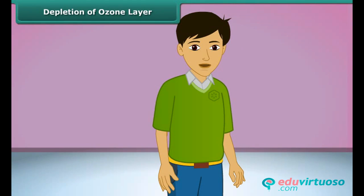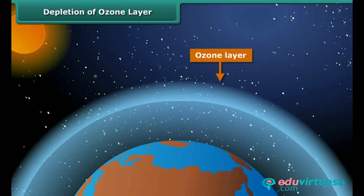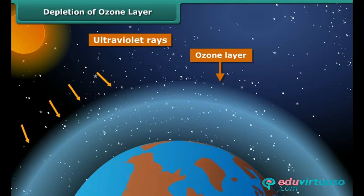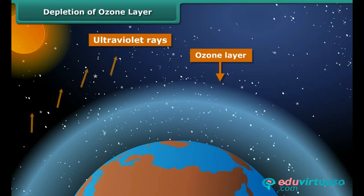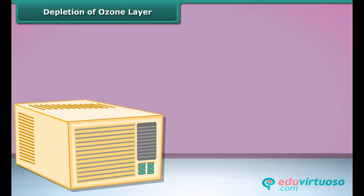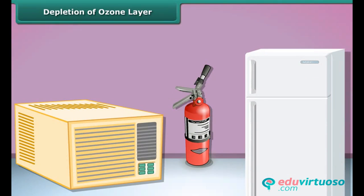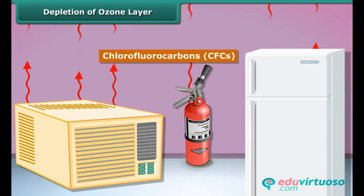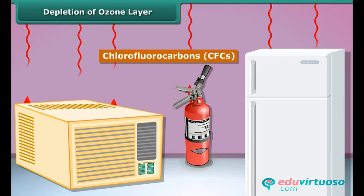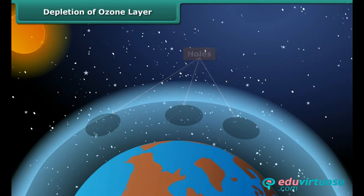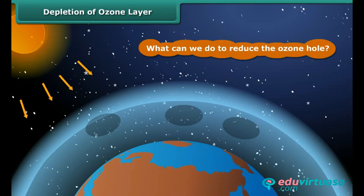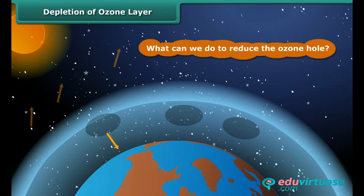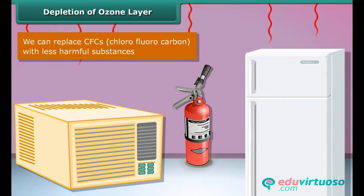Let us learn about the ozone layer. It is a layer of ozone gas in the upper atmosphere of Earth. Its role is to protect us from the harmful ultraviolet rays of the sun. Things like air conditioners, refrigerators, and fire extinguishers release chlorofluorocarbons, CFCs, into the atmosphere, creating holes in the ozone layer. CFCs are another type of air pollutant. We can replace CFCs with less harmful substances to save the ozone layer from depletion.